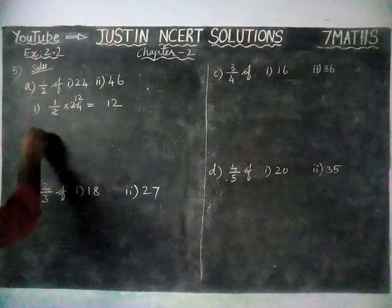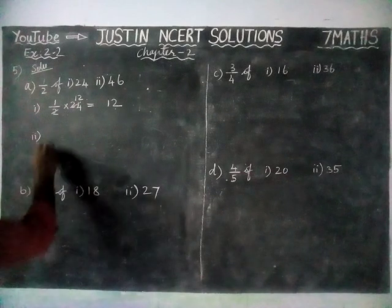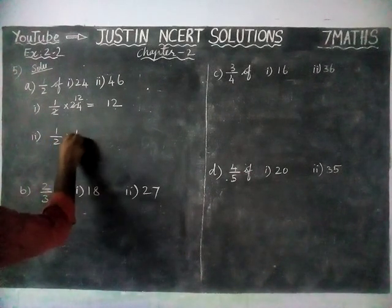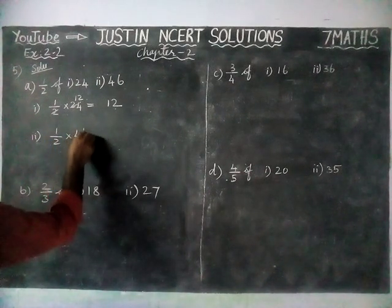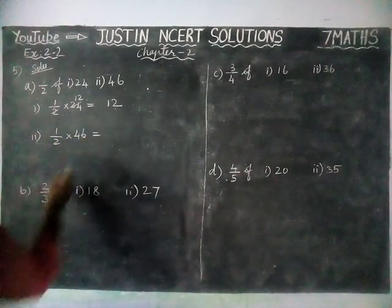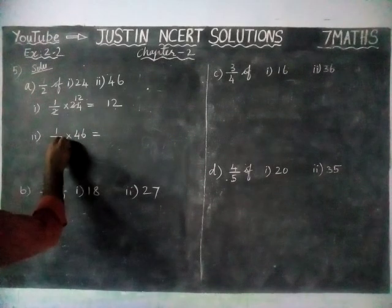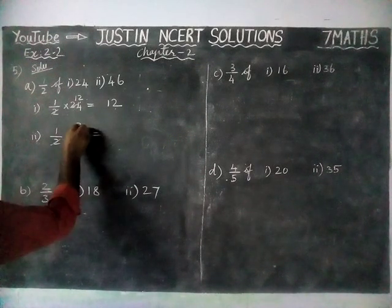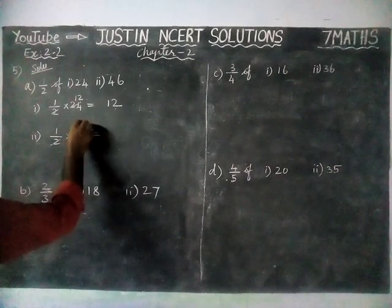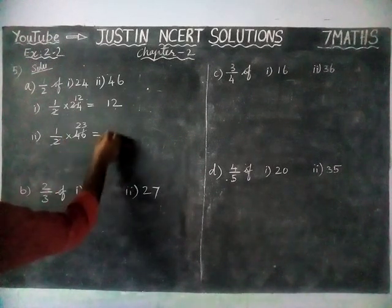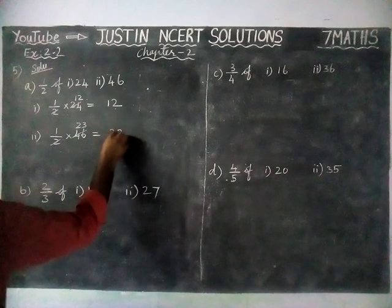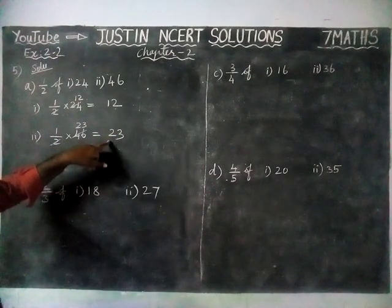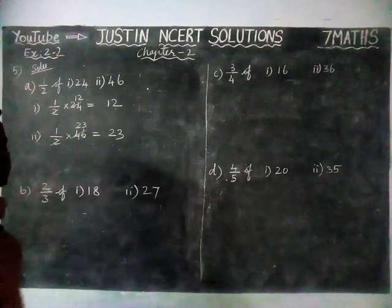Next, the second problem: 1 by 2 of 46. We can simplify it — 2 goes into 46 twenty-three times. So the answer is 23. Therefore, 1 by 2 of 46 is equal to 23.